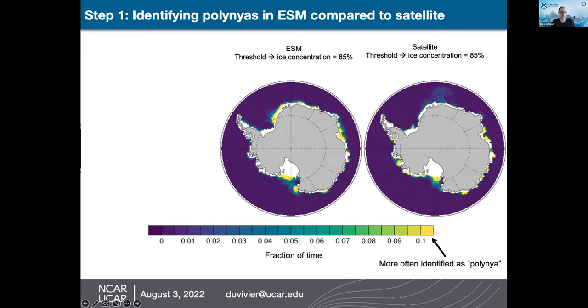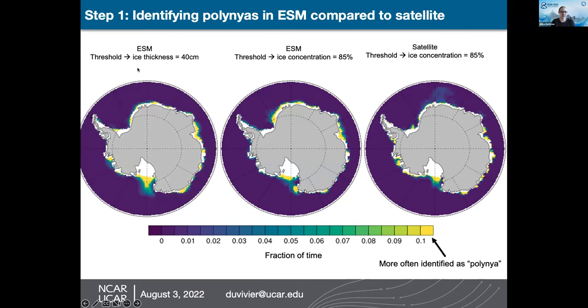We've also explored identifying polynias in the Earth system model using an ice thickness threshold — specifically 40 cm — and we find that this actually looks a lot more similar to the satellite results. An Earth system model can have areas of high ice concentration but very thin ice that a satellite might otherwise identify as ice-free. So identifying polynias is actually a lot more nuanced and complex than it might seem.